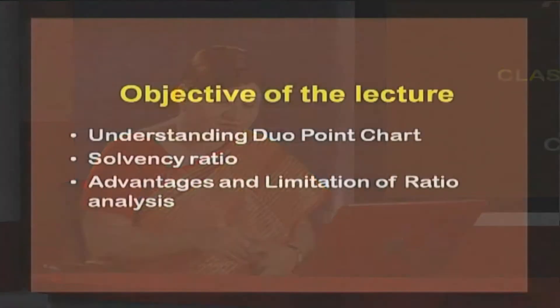We said that we have classified the ratio on the basis of profitability, on the basis of activity, on the basis of solvency where the short-term position as well as long-term positions can be assessed of a company. Taking up one of the bases — that is the solvency of the company — we will discuss certain ratios.